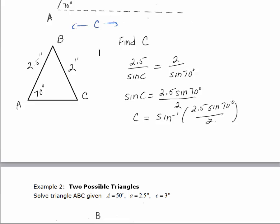We know that we can't take the inverse sine of a value that's greater than 1 or less than negative 1 because the domain for inverse sine is negative 1 to 1. So if I just evaluate this value in here and see if it's greater than 1 or less than negative 1, then I know there's no triangle.